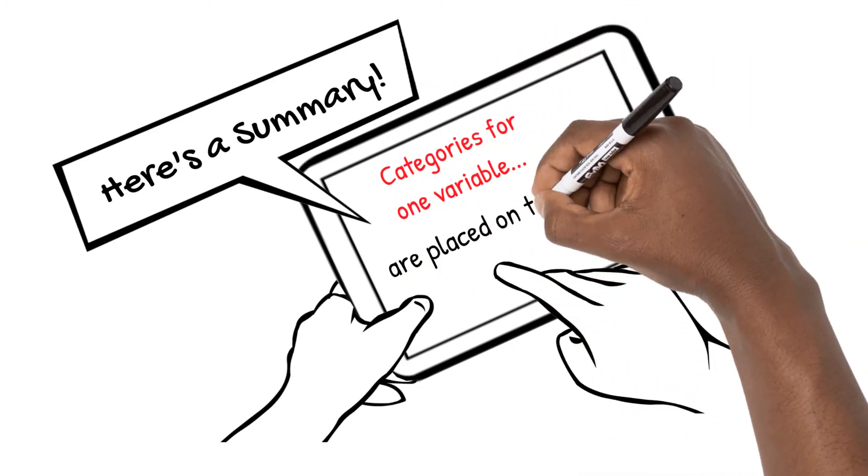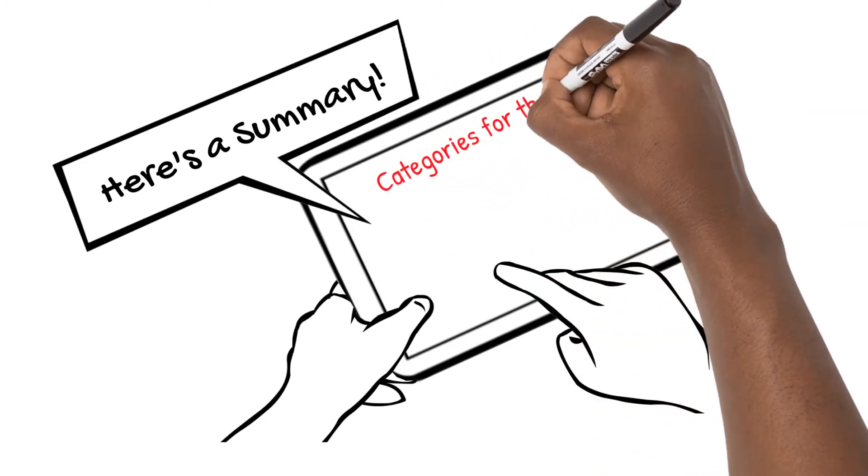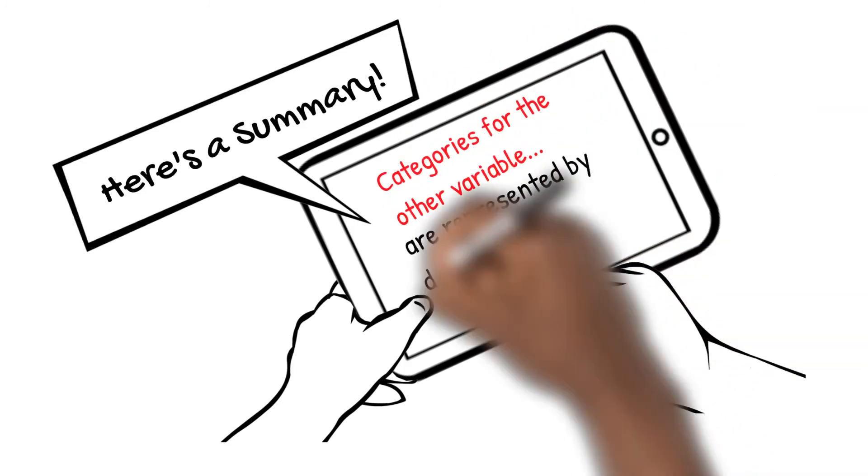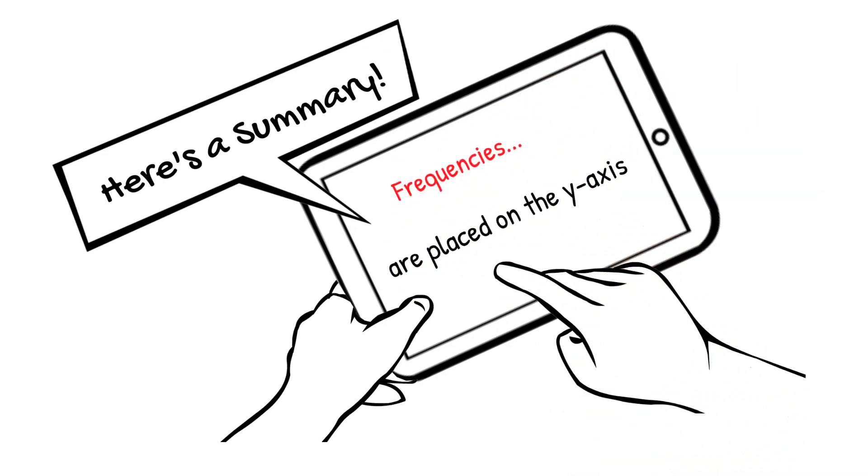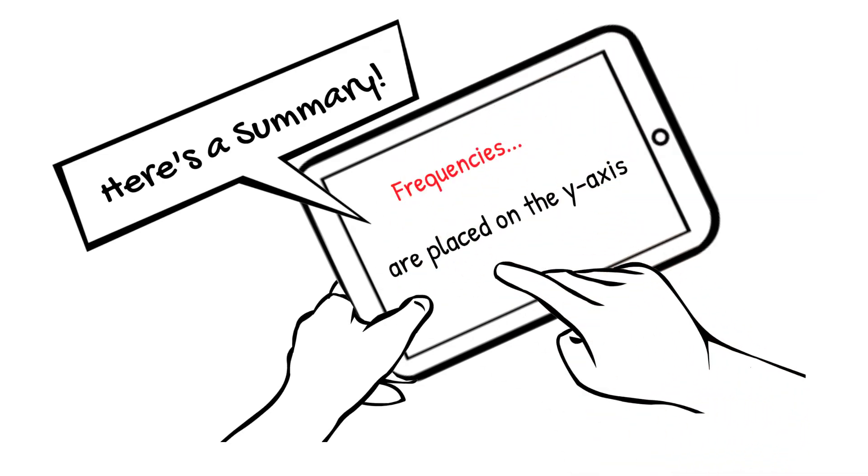Categories for one variable are placed on the x-axis. Categories for the other variable are represented by different color bars. Frequencies are placed on the y-axis.